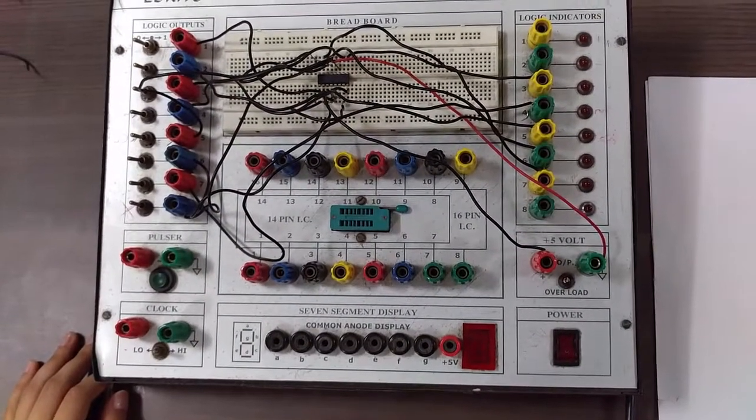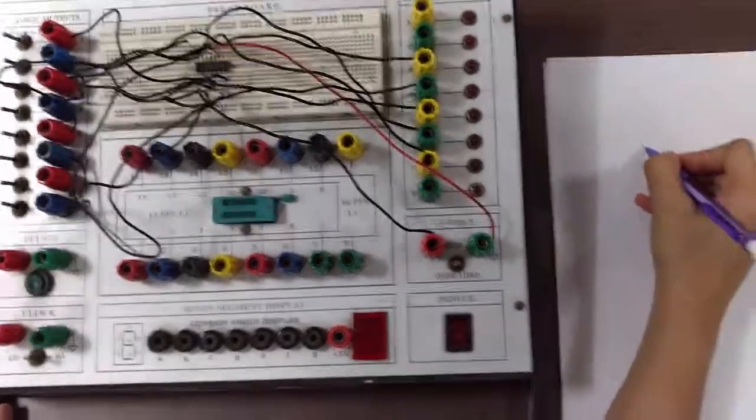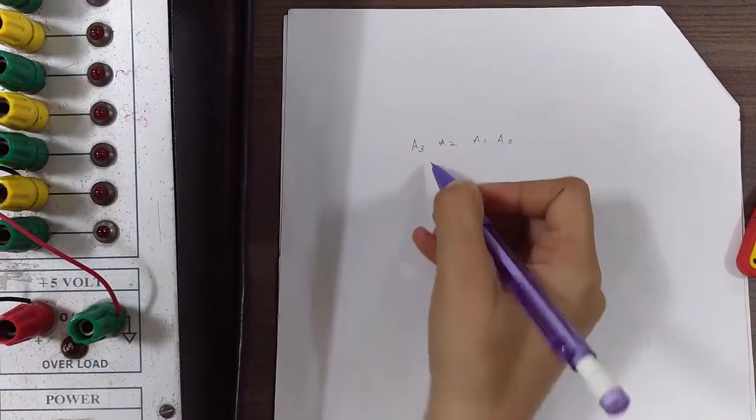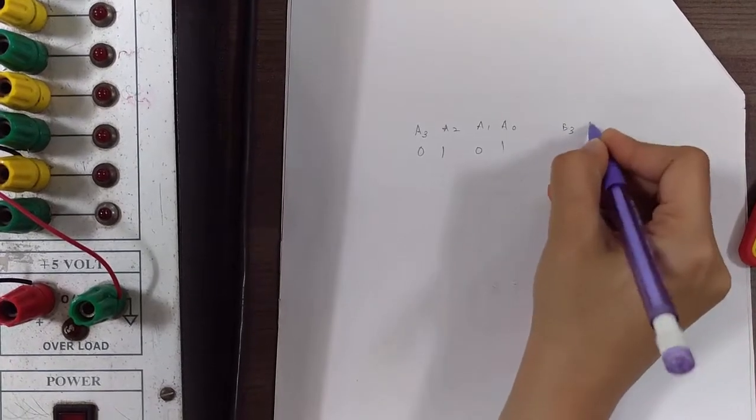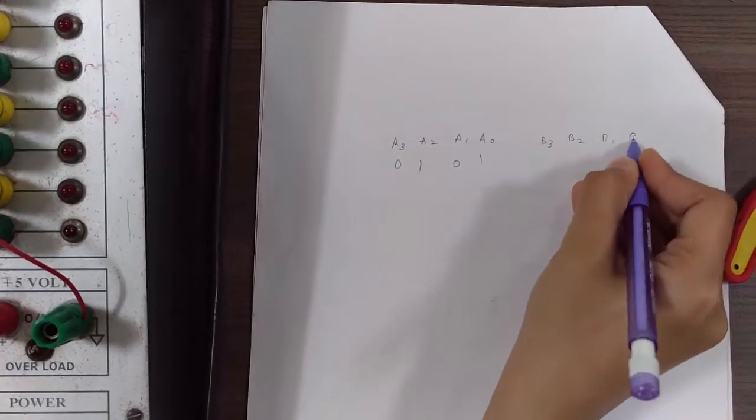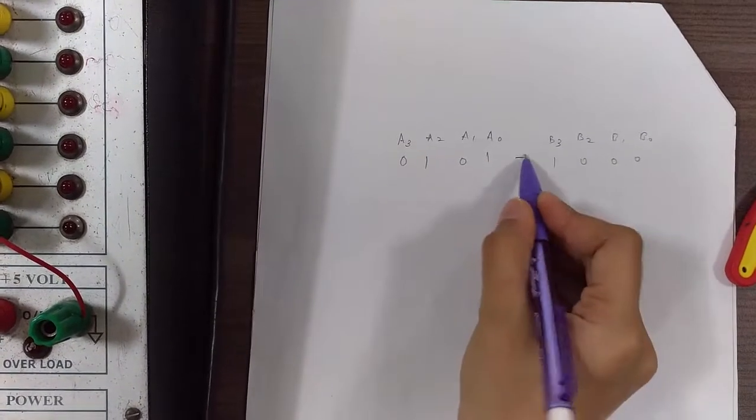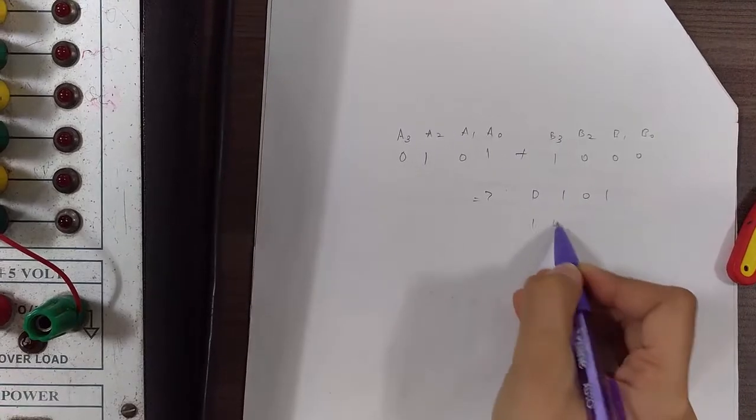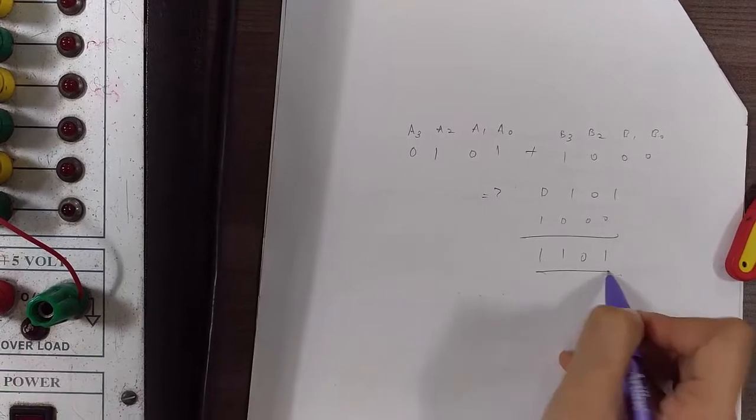So now we are done with the circuit connections as explained before. Let's check the output for input A: A3, A2, A1, A0 is 0101 and B: B3, B2, B1, B0 is 1000. So the addition of this is 01011000, which gives us 01011. We need to get this output.